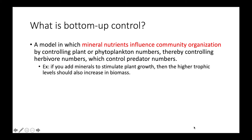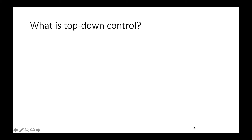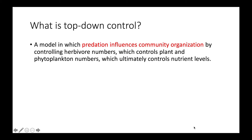Those extra herbivores could support more predators. Top-down control is the opposite of bottom-up control. In this model, the thing that influences community organization is predation, which starts at the highest trophic level. Predation influences the number of herbivores, which in turn influences how many plants and phytoplankton there are, and that controls how much nutrients are left in the community.